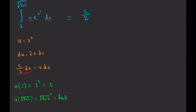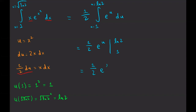With the substitution, we have one half times the integral from one to ln two of e^u du. This is a simple integral. The integral of e^u is just e^u, so we evaluate it at ln two and at one. We get one half·e^(ln 2) minus one half·e^1. Since e^(ln 2) simplifies to two, and e^1 is just e, we have one minus e over two.